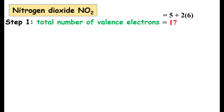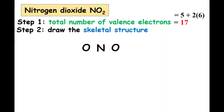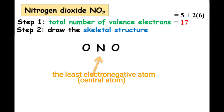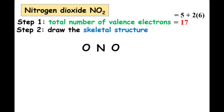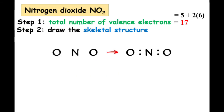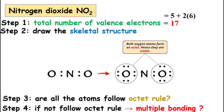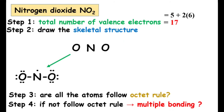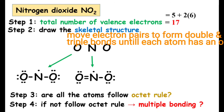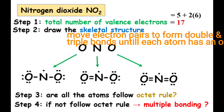Next, the Lewis structure of nitrogen dioxide. Step 1: the total number of valence electrons in nitrogen dioxide is 17. Step 2: we draw the skeletal structure of nitrogen dioxide. Always put the least electronegative atom, which is the central atom, at the center. Then put two electrons between each nitrogen atom and oxygen atom to represent a chemical bond between them. Then you have to complete the octet on the oxygen atoms. You can see in the diagram that all the oxygen atoms form an octet.